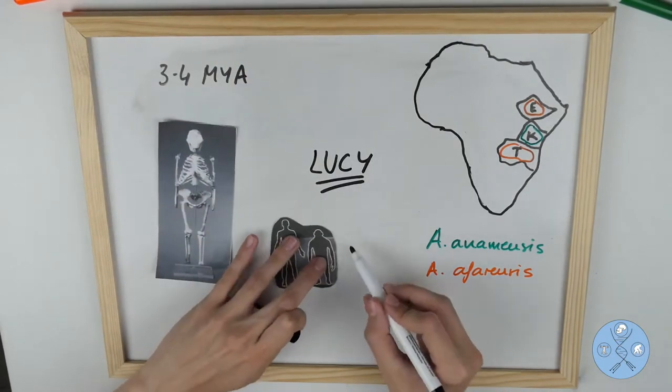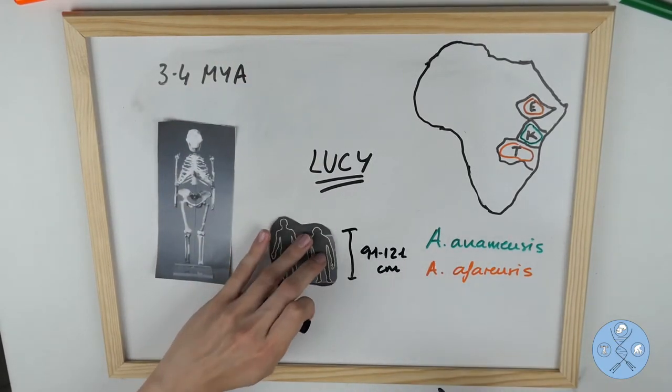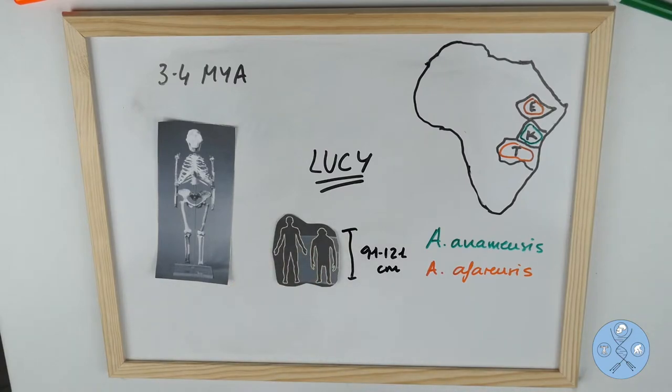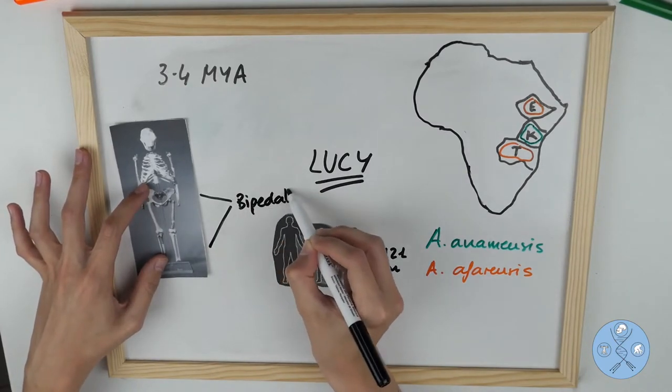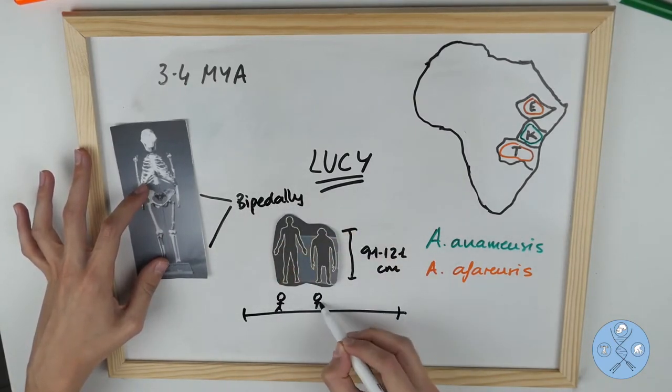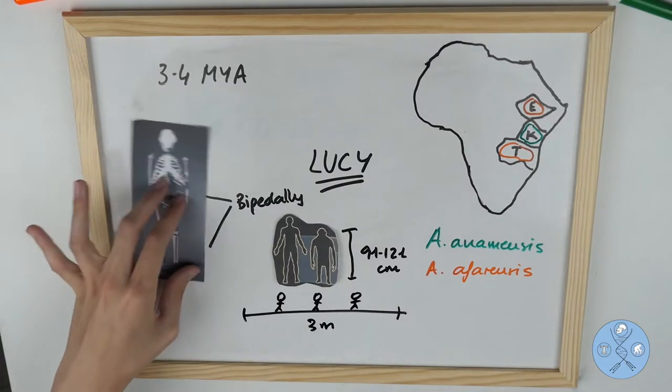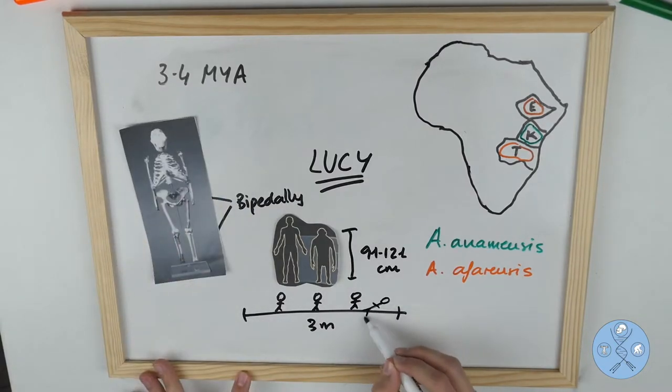Thanks to Lucy, today we can estimate the probable height of Australopithecus afarensis, around 91 and 121 cm, kind of tiny comparing it with us, modern humans. Its brain is larger than the average brain size of the chimpanzee, and so are the chewing teeth. This may indicate that its diet included harder food than the diet of chimps. The shape and size of the pelvis and lower limbs suggest that Australopithecus afarensis was able to walk bipedally, but probably only for short distances.